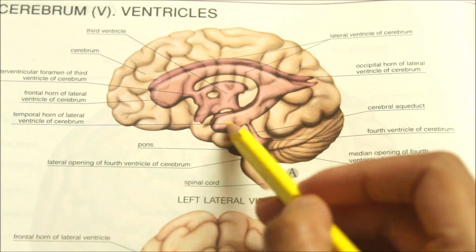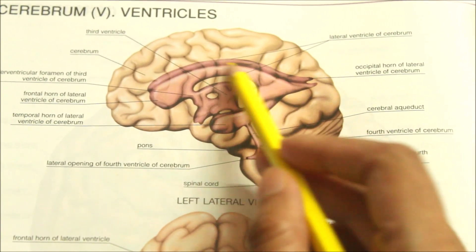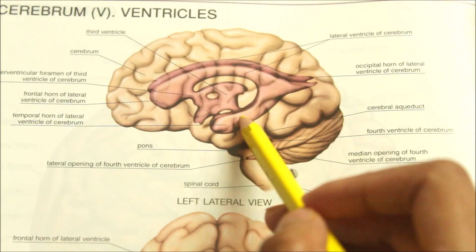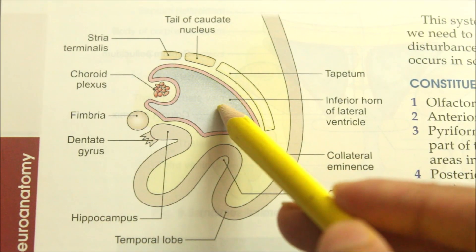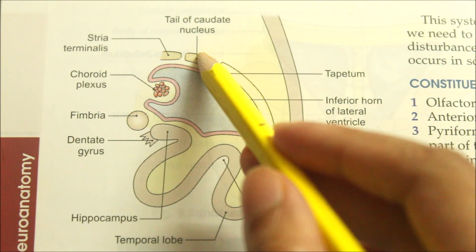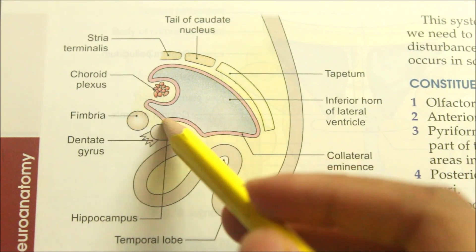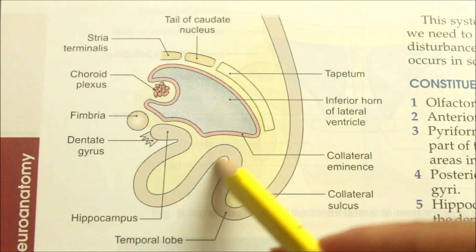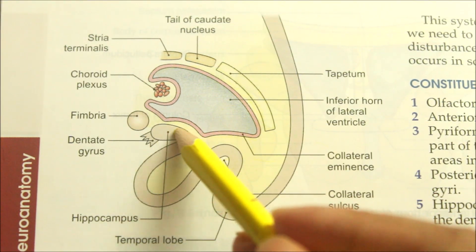Finally, the inferior horn of the lateral ventricle — this is the largest horn. It begins at the junction of the central part with the posterior horn and extends into the temporal lobe. The roof and lateral wall are formed chiefly by the tapetum, the tail of the caudate nucleus, the stria terminalis, and the amygdaloid body. The floor is formed by the collateral eminence, raised by the collateral sulcus, and the hippocampus medially.